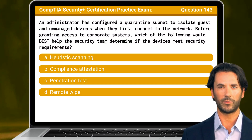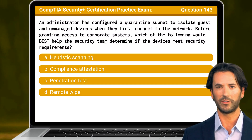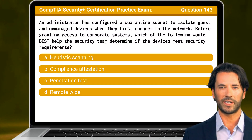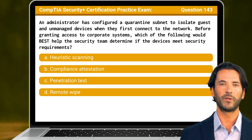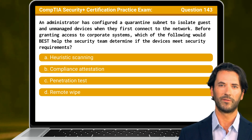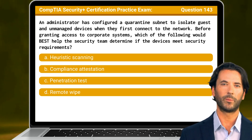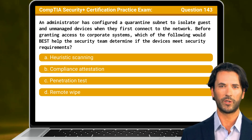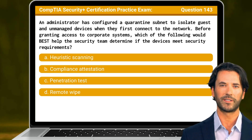Question 143: An administrator has configured a quarantine subnet to isolate guest and unmanaged devices when they first connect to the network. Before granting access to corporate systems, which of the following would best help the security team determine if the devices meet security requirements?